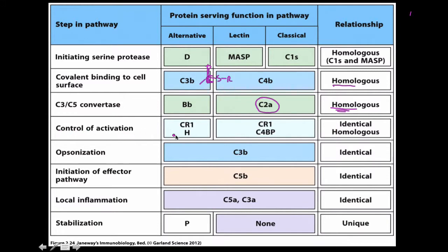For control of the actual activation, in the alternative pathway it's CR1 — complement receptor 1 — which is part of the activation. We talk about CR1 and C4β, which are also considered identical homologues. For opsonization, they both have C3β, but you could also include C4β, which also acts similarly as an opsonin.